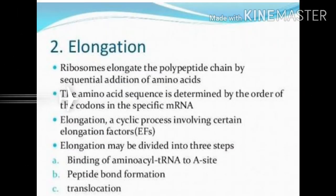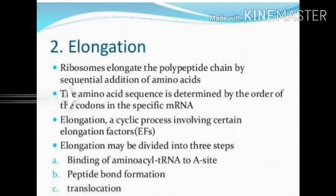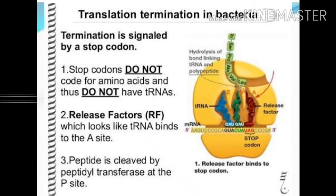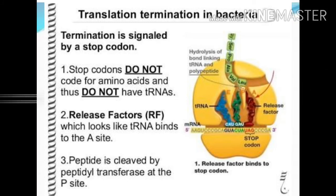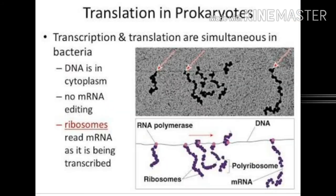Amino acids are added step by step in the sequence of codons and are translated into a polypeptide sequence as determined by the DNA and represented by the messenger RNA. Then comes termination of polypeptide synthesis. It occurs when the A-site of the ribosome reaches a termination codon. A release factor binds to the stop codon, and as a result the polypeptide synthesis stops, releasing the polypeptide from the ribosome.